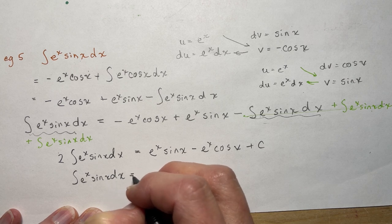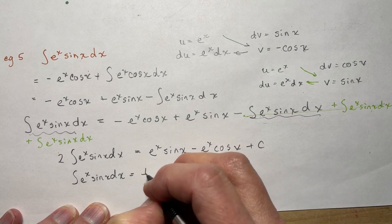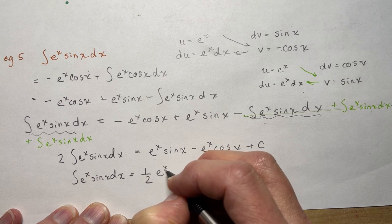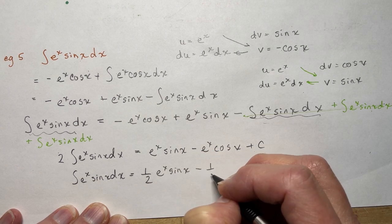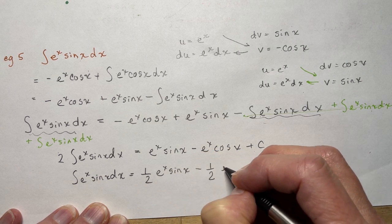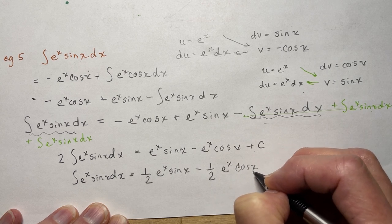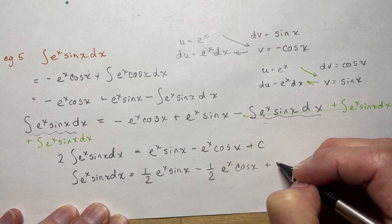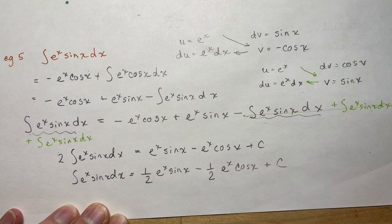So ∫e^x·sin(x)dx equals (1/2)e^x·sin(x) minus (1/2)e^x·cos(x) plus c — or just c, it's the same thing.